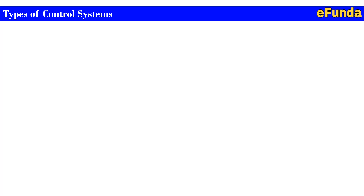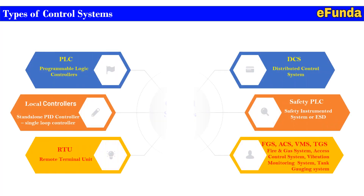Here we will see a brief overview of the types of control systems. These include PLC (Programmable Logic Controller), Local Controller, Standalone PID Controller (Single Loop Controller), RTU (Remote Terminal Unit), Distributed Control System (DCS), Safety PLC (Safety Instrumented System or Emergency Shutdown System - ESD), FGS, ACS, VMS, TGS (Fire and Gas System), Access Control System, Vibration Monitoring System, Tank Gauging System, and others — the various types of control systems used in industrial environments for efficient and controlled operation.